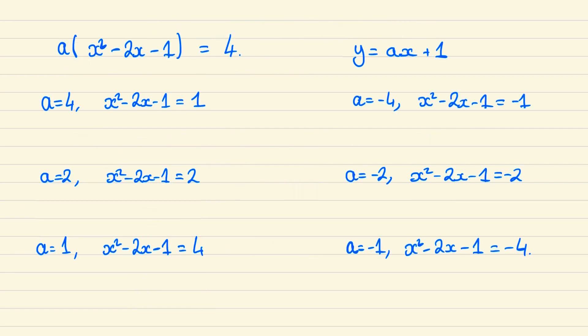Now solving these one at a time, when a equals 4 we have no solution. When a equals minus 4 we have x equal to 0 or x equal to 2, and solving this in for y we would have y equal to 1 or y equal to minus 7.